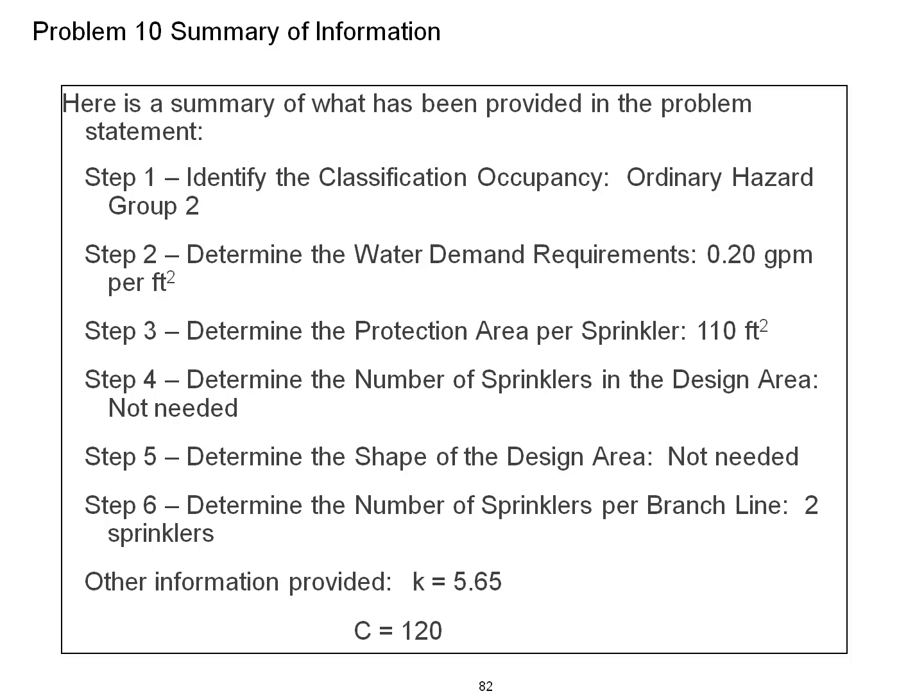Step 4, determine the number of sprinklers in the design area: not needed. We're only going to calculate two sprinklers. Step 5, determine the shape of the design area: not needed. Step 6, determine the number of sprinklers per branch line: two sprinklers.